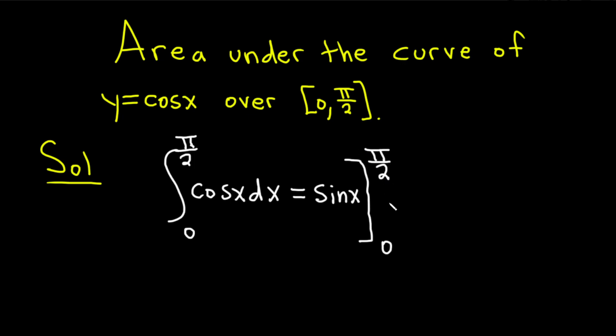So first you plug in the top number. So this is the sine of pi over 2. Then you subtract and then you plug in the bottom number so you get the sine of 0. The sine of pi over 2 is 1, and the sine of 0 is 0. So you get 1 minus 0, so you just get 1.